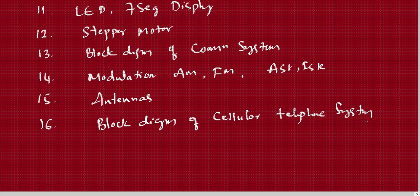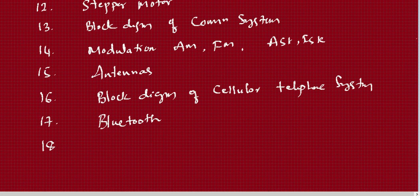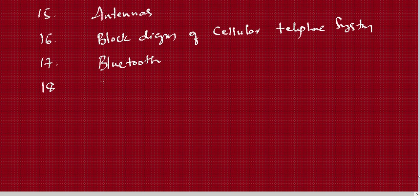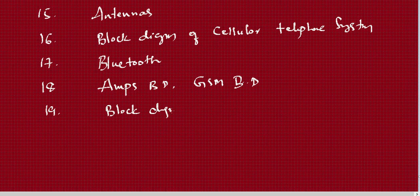The cellular telephone system block diagram has been asked many times in previous semester exams and in other subjects. Bluetooth is also important. You need to go through 1G, 2G, 3G, and 4G — including the AMPS block diagram and the GSM block diagram with concepts related to GSM.